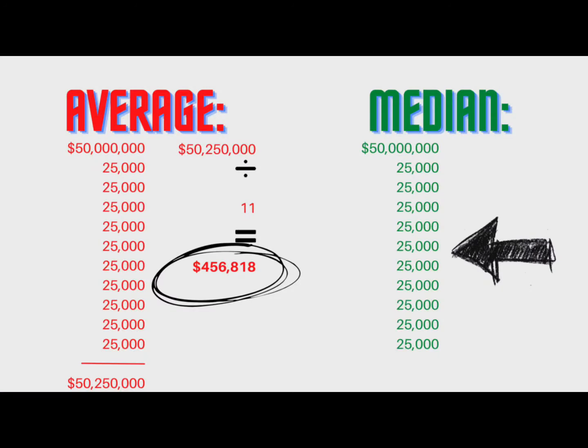Now we're going to look at median home price, which is what falls in the middle, and you're going to see immediately how much better this is. Median means in the middle — half of the home values would be below and half would be above, and the median home price right in the middle is $25,000. So if you want to buy a shack in this town, it's $25,000 — that's the going rate, that's the median home price. In this totally ridiculous example, you can see how the average home price really didn't tell you anything and the median home price was spot on.